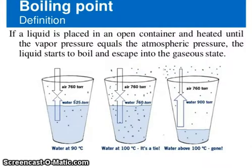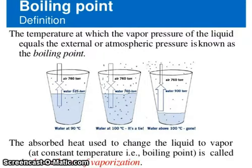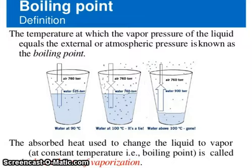What is the boiling point? If a liquid is placed in an open container and heated until the vapor pressure equals the atmospheric pressure, the liquid starts to boil and escapes into the gas phase. The temperature at which the vapor pressure of a liquid equals the external or atmospheric pressure is known as the boiling point. The heat absorbed to change the liquid to vapor at constant temperature at the boiling point is called the latent heat of vaporization.